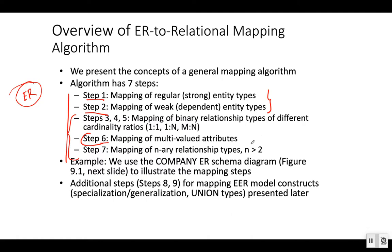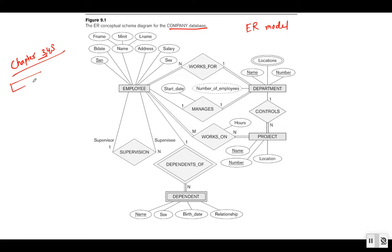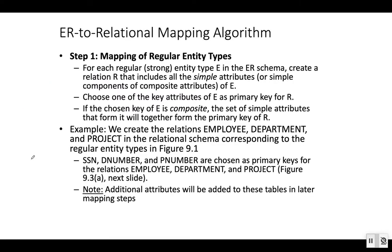Our example throughout this chapter is the company database ER diagram — the same example used in chapters three, four, and five. In chapter three we saw the relational database schema for this company database. Now we are seeing the ER diagram, and finally we are going to see the step-by-step approach to derive that relational schema from the ER diagram.